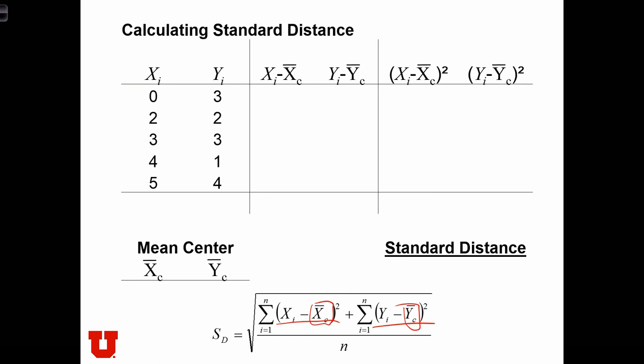So the mean center along the x's is just the sum of the x's divided by n. So we have 0, 2, 3, 4, 5 - that's 14 over 5. And the mean center of the y is 0, 2, 3, 1, 4 - that's 13 over 5.